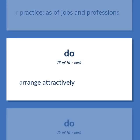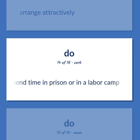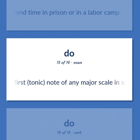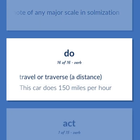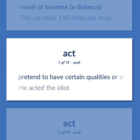Do: Arrange attractively. Spend time in prison or in a labor camp. The syllable naming the first tonic note of any major scale and psalmization. Travel or traverse a distance — 'This car does 150 miles per hour.'